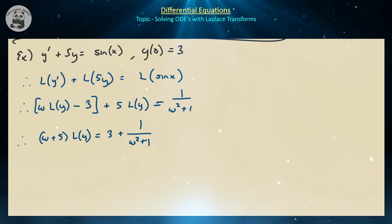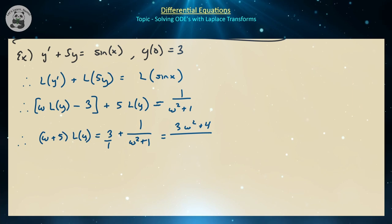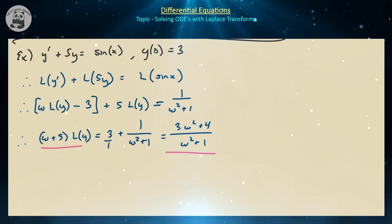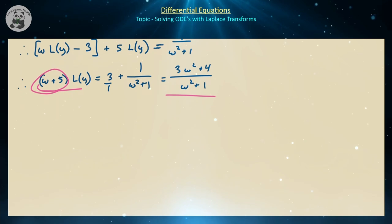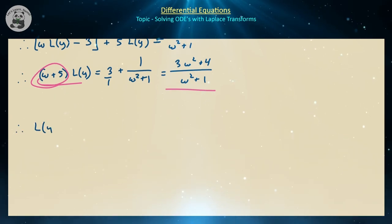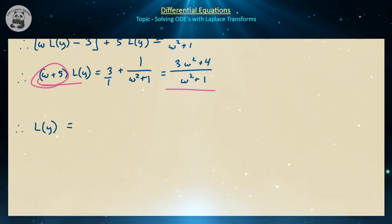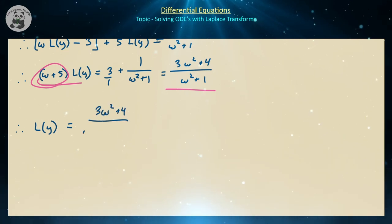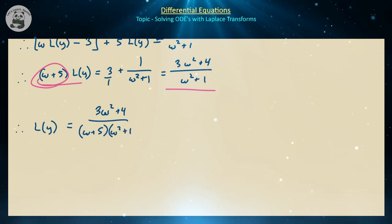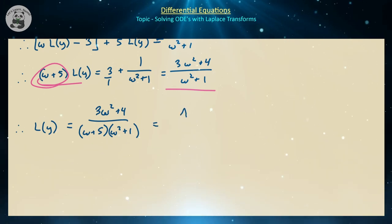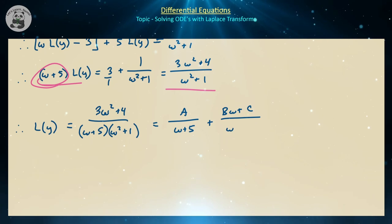Factoring the two L{y} terms on the left gives omega plus 5 times L{y} equal to 3 plus 1 over omega squared plus 1. With a common denominator, the right-hand side becomes 3 omega squared plus 4 all over omega squared plus 1. Dividing both sides by omega plus 5 isolates L{y}, and we then use partial fraction decomposition.